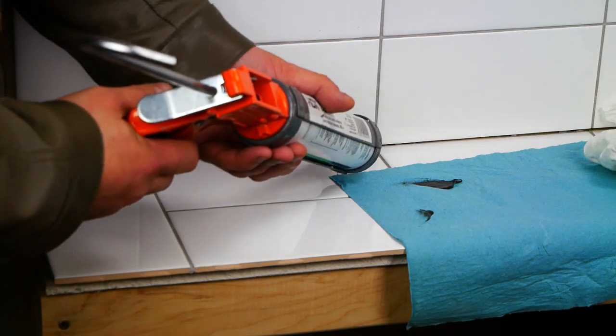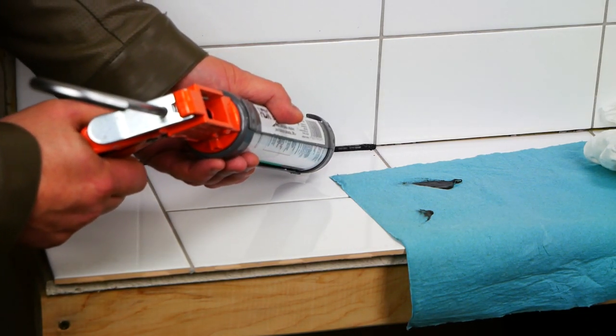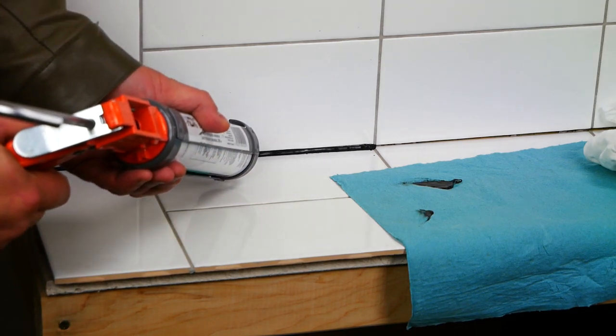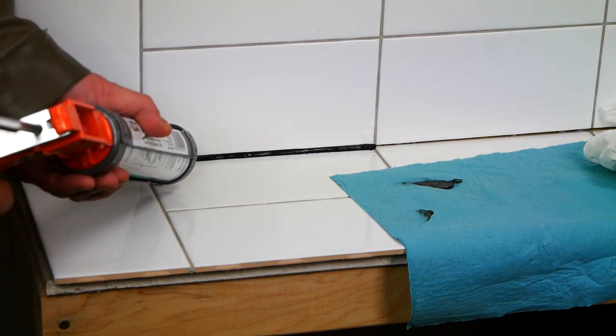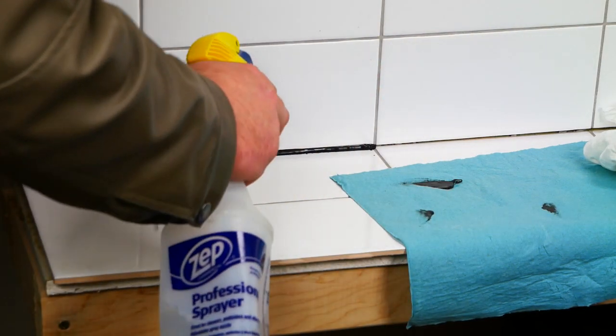You want to make sure that when you're doing this, you get the silicone completely in the caulk joint. You don't want any voids or gaps, because if you spray the alcohol in a void, then the silicone won't stick to that.